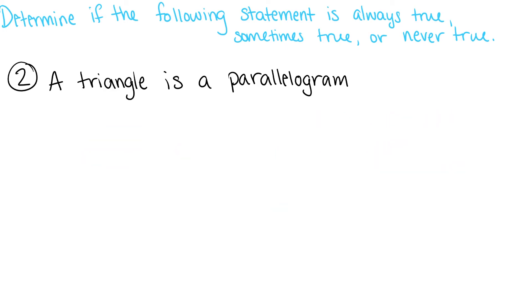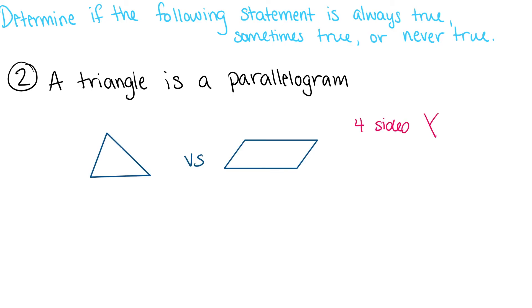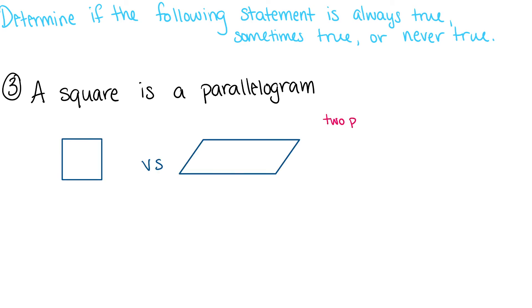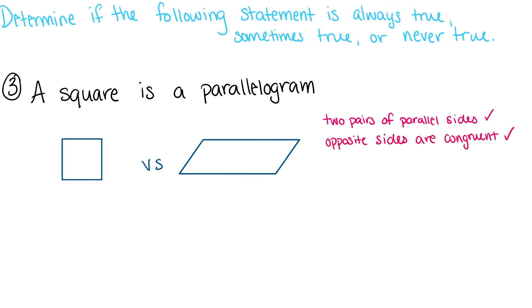A triangle is a parallelogram. Well, parallelograms have four sides and triangles have three sides, so this statement is never true. A square is a parallelogram. Squares have four sides, opposite sides are congruent, opposite angles are congruent, and squares have two pairs of parallel sides. Therefore, this statement is always true.